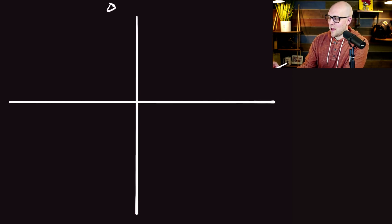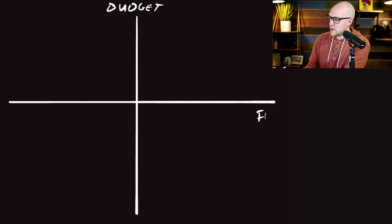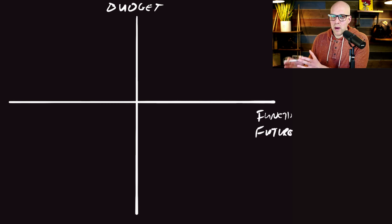One of the first things we're going to focus on is this grid right here — this XY chart. I'm going to break down your decision into four different quadrants. On the top of the Y axis, you're looking at budget, and on the X axis, this is going to be function. I'm also going to put on here 'future.' So where does Monday.com and ClickUp live on this grid?